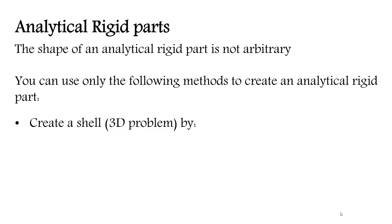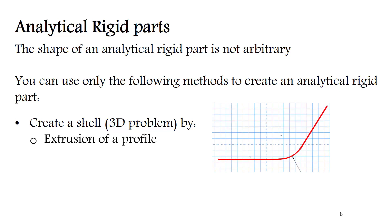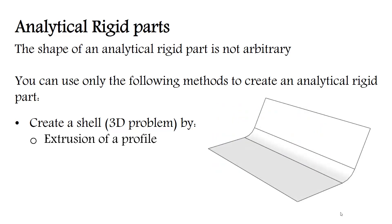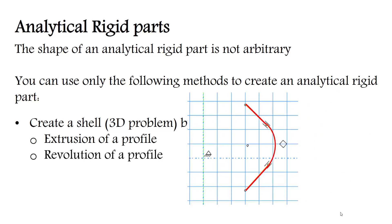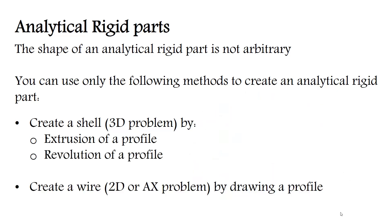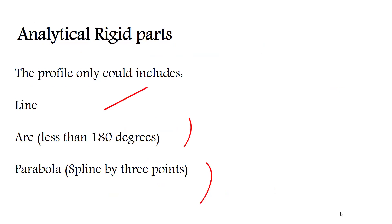You can use only the following methods to create an analytical rigid part: create a shell in three-dimensional problem by extrusion of a profile, revolution of a profile, or create a wire in two-dimensional or axisymmetric problem by drawing a profile. The profile of analytical rigid parts could only include line, arc less than 180 degrees, and parabola.